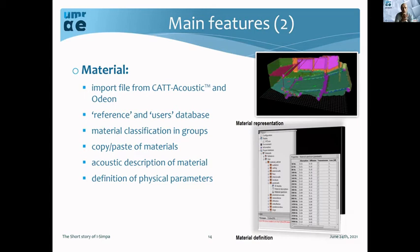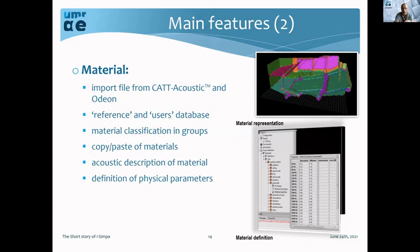Regarding materials, you can create your own database inside the software. You can create materials or groups of materials by defining absorption, diffusion, and transmission coefficients. You can also import data from other acoustic software. The database provided in I-Simpa is probably limited today, but you can expand it with your own materials. And you can copy materials from one project to another project in I-Simpa quite simply.